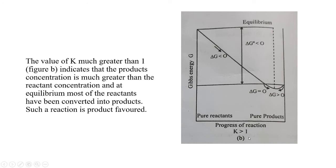Look at this figure. If the value of K is greater than 1, in such a case the product concentration is much greater than the reactant concentration. When K is greater than 1, the product concentration is greater than the reactant concentration at equilibrium. At equilibrium, most of the reactants are converted into products. Such a reaction is product-favored.